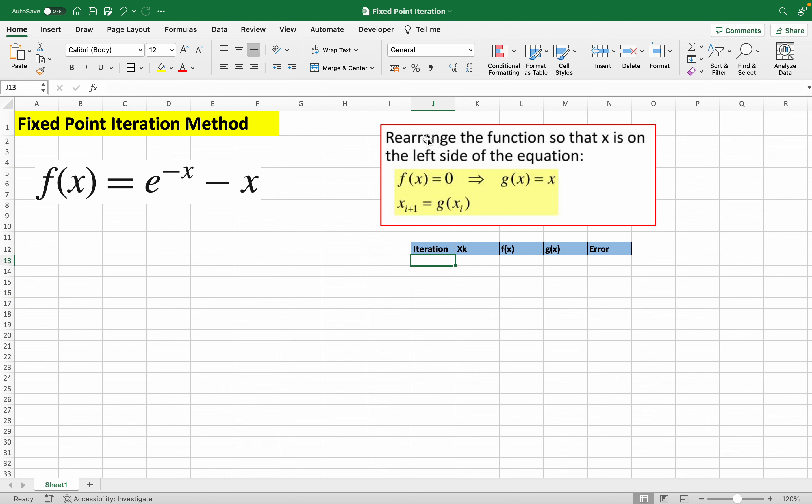Here is how we use the fixed point iteration method. We have to rearrange the function so that x is on the left side of the equation. What it means is we have to move this x here to the other side to get our g(x).